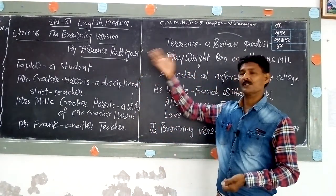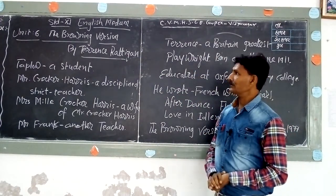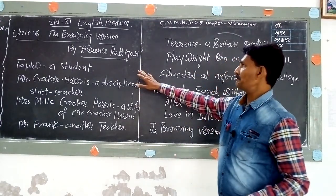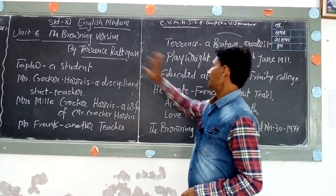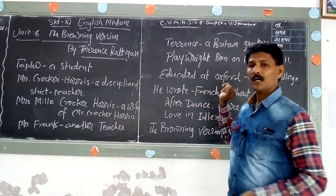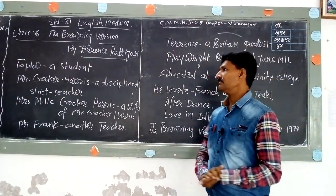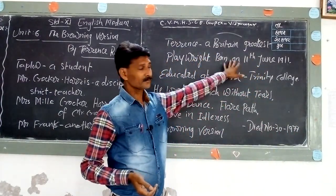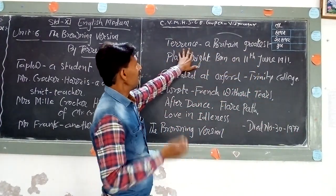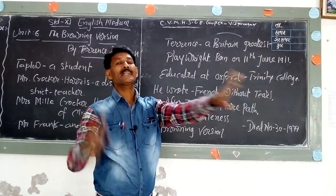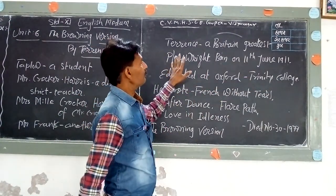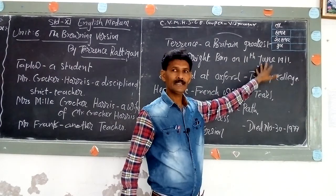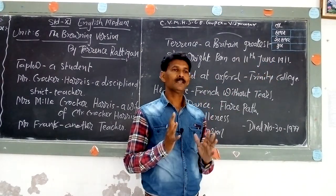Now, switching over to Unit 6, The Browning Version — it is by Terence Rattigan. Terence Rattigan was a British writer, a great playwright, who was born on 11th June 1911.